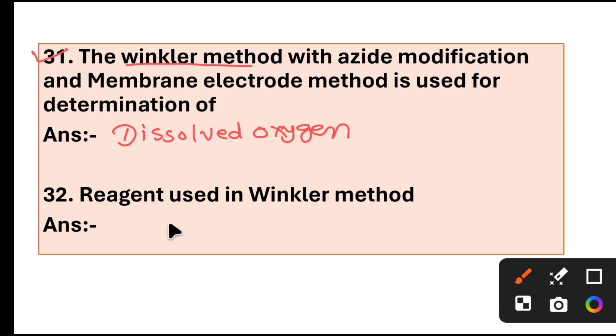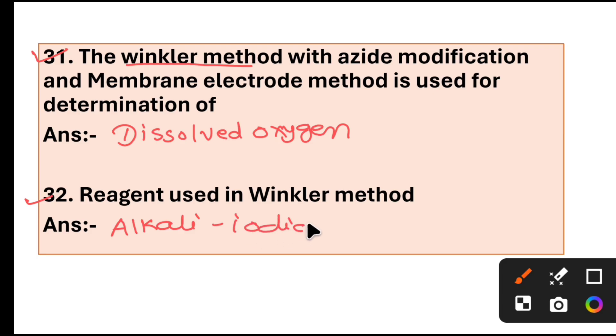Question 32: Reagents used in the Winkler method are alkali, iodide, and azide.